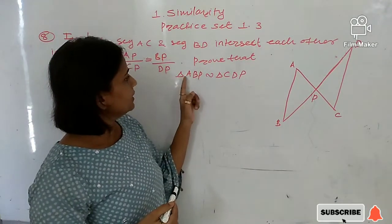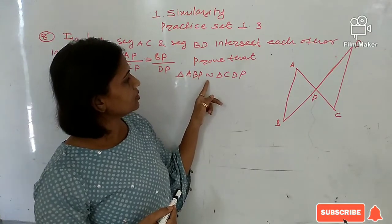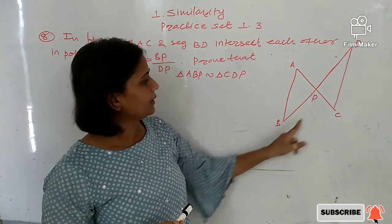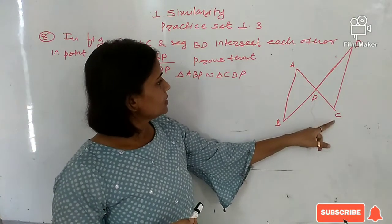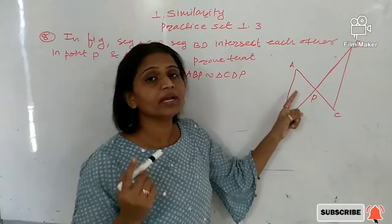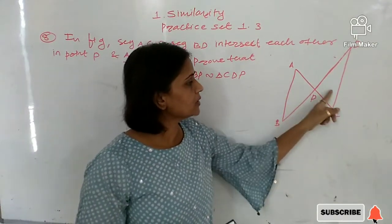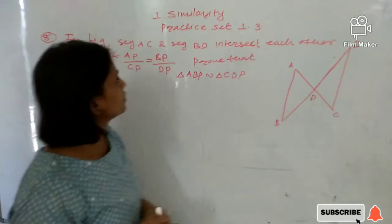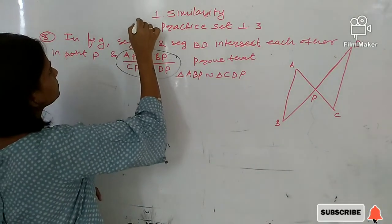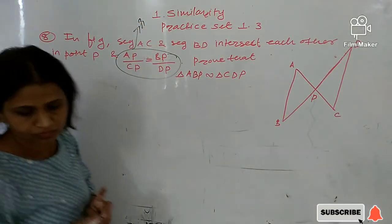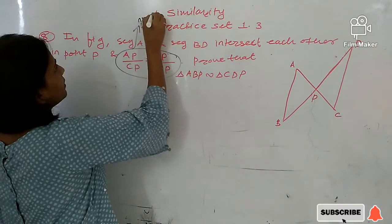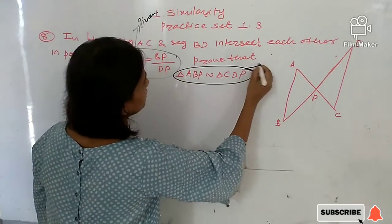We have to prove that triangle ABP is similar to triangle CDP. This is our given part and this is our to-prove part.